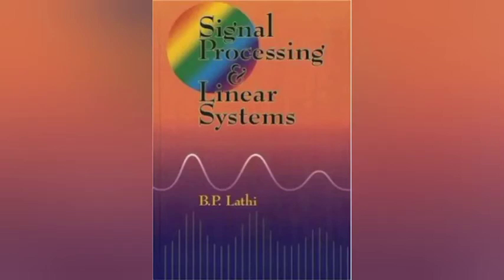Alexander Graham Bell in 1876 made a simple telephone model to send voice in the form of an electric signal from one place to another. It consists of a metal reed, an electric coil, and a vibrating diaphragm.